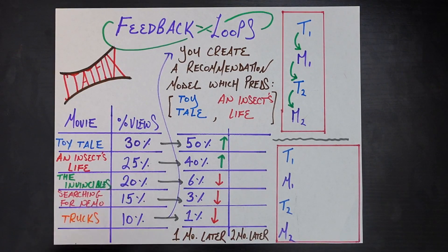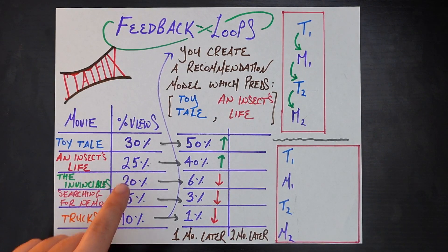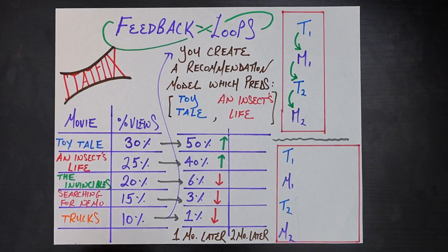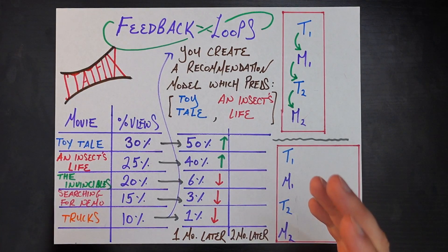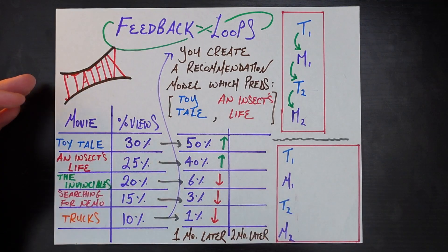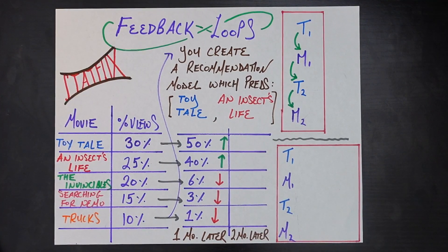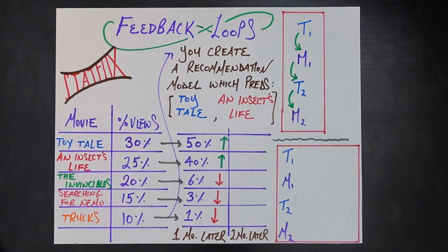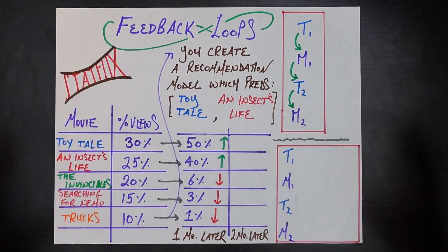Toy Tale gets 30% of the views, An Insects Life gets 25%, The Invincibles gets 20%, Searching for Nemo gets 15%, and Trucks gets 10% — and those add up to 100%. The ask is to create the first recommendation model at Statflix, which is going to recommend good movies to your users, hopefully making them happy and creating a good product overall.